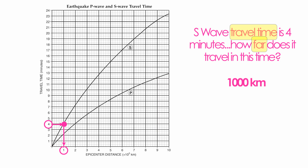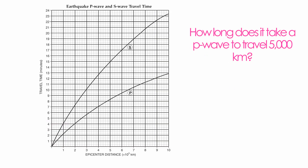Let me show you another one. How long does it take a P-Wave to travel five thousand kilometers? Again, look for keywords — 'travel' is going to be an important term here. We want to know the travel time for a specific distance. Five thousand kilometers is given to you. You find five thousand kilometers on the horizontal axis, bring it up to your P-Wave curve, follow it across, and the travel time turns out to be about eight minutes and twenty seconds.